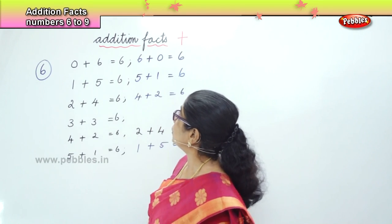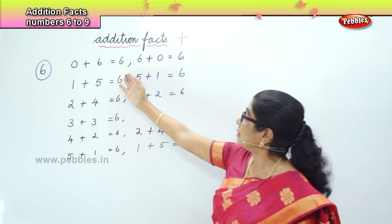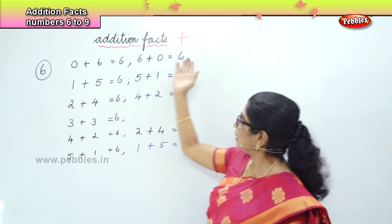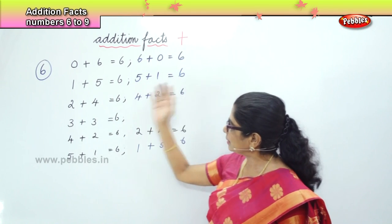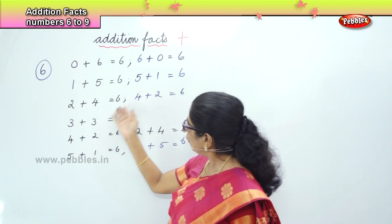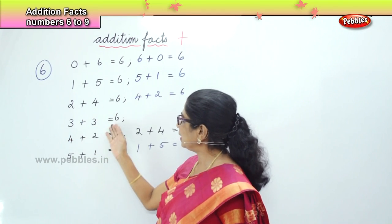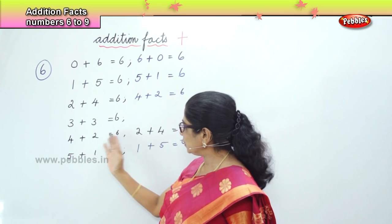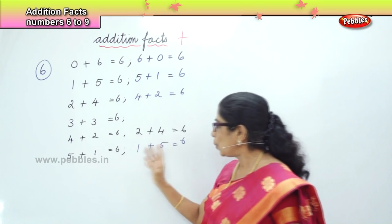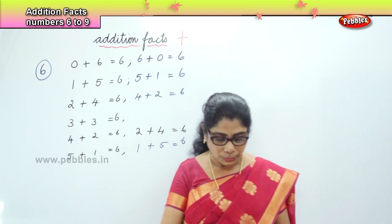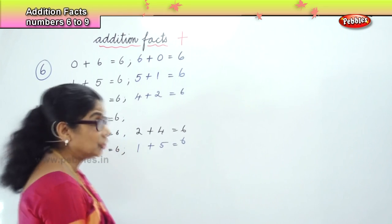So what are the number combinations in the addition facts of 6? 0 plus 6 is 6. 6 plus 0 is 6. 1 plus 5 is 6. 5 plus 1 is 6. 2 plus 4 is 6. 4 plus 2 is 6. 3 plus 3 is 6. And that's what we looked at.